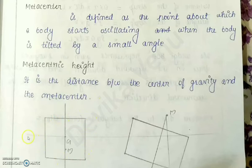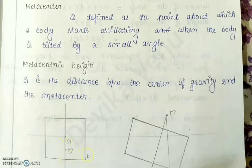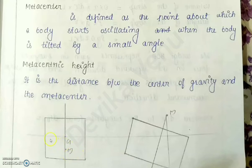Here, this is a body floating on a liquid. This is the free surface of the liquid. Only the mesh portion is immersed inside the liquid. The force of buoyancy will act in the upward direction through the center of buoyancy. For this rectangular shaped body, the center of buoyancy will be at the exact center of the portion immersed in the liquid. To find out the center of buoyancy, you have to find out the center of gravity of the portion immersed in the liquid.